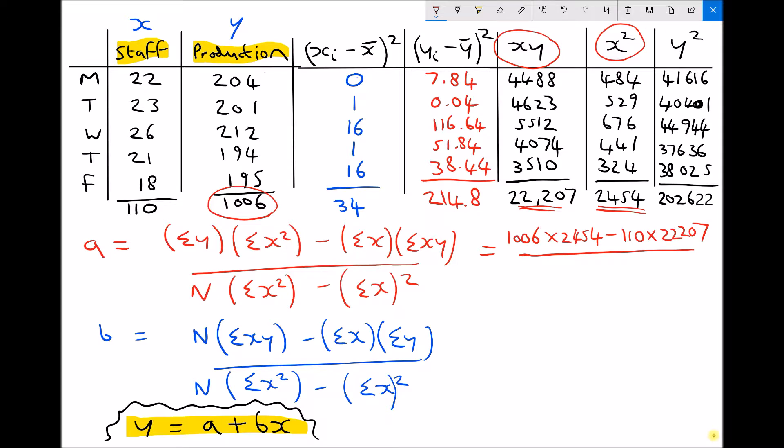On the bottom of that fraction, we have n, the number of data points, which is 5, times the sum of all the x squared data. We've already seen this in our second column from the right: 2454, minus the sum of all our x data, then squared.